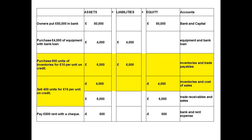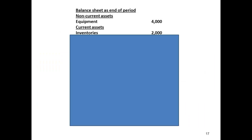I can now focus on determining current assets. The first of these is the value for any inventories. Two transactions are relevant: I bought £6,000 of inventories but have since sold £4,000 worth, leaving me with £2,000 of inventories. This figure of £2,000 is the figure that I need to use for inventories.